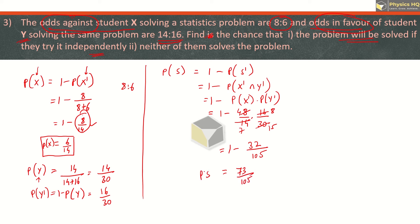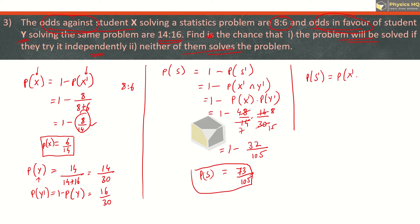This is the probability that the sum will be solved. For the second part, neither of them solves the problem: that is P(S dash), which equals P(x dash intersection y dash), which we already calculated as 32 by 105.